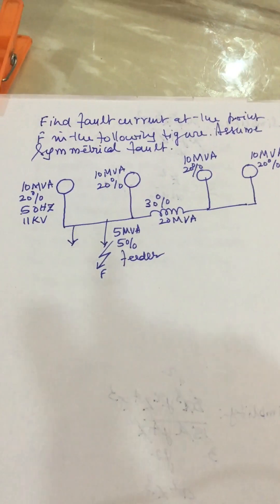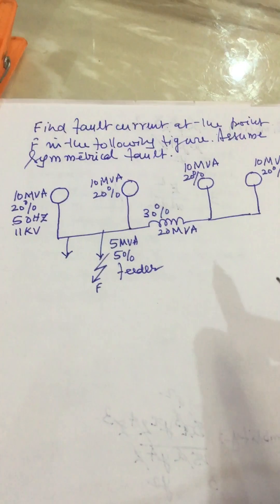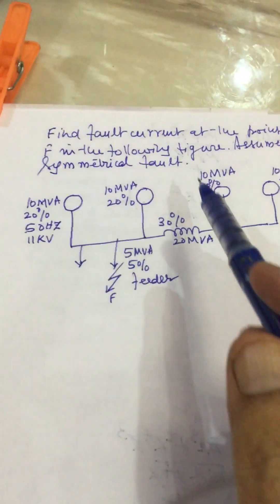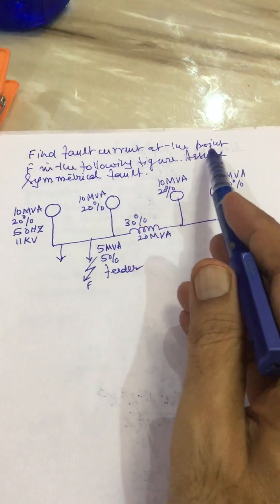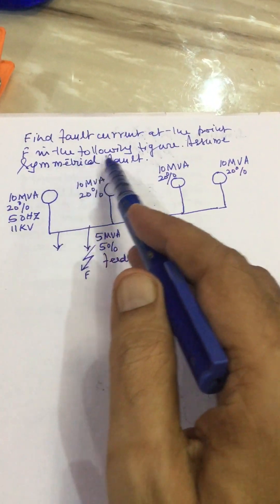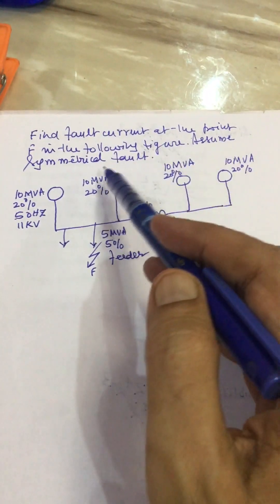Dear friends, in this video we will solve one problem on finding fault current. Problem is like this: find fault current at the point F in the following figure, assume symmetrical fault.